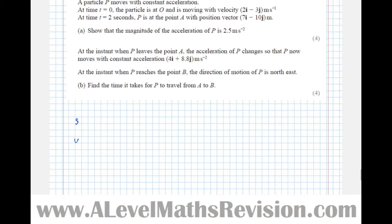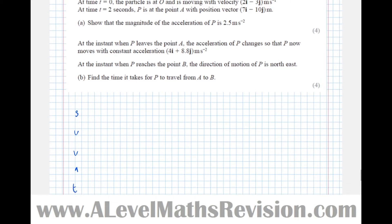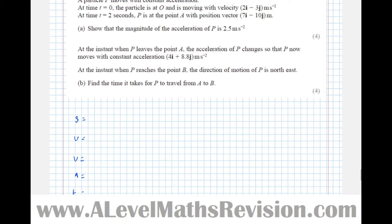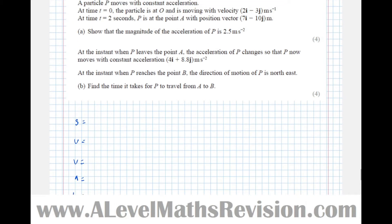Let's get all the information in SUVAT form. We're not going to write i's and j's; we're going to write things in column vectors, it makes it much easier. So at time t equals 0, the velocity is 2 minus 3, i.e. u is 2 minus 3.